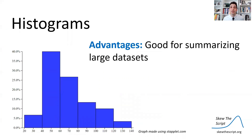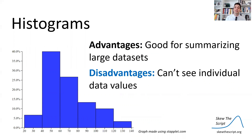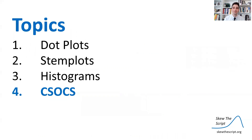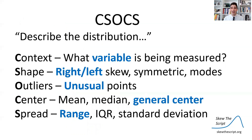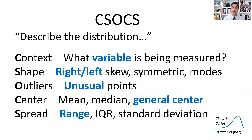Advantages of histograms are that they're good for summarizing large data sets. The disadvantage is that you can't see individual data values, so if you want granularity with a small data set, a histogram won't give you that. When describing a data plot, we want to use what's called CSOCS. If asked to describe a quantitative distribution, talk about: Context, Shape, Outliers, Center, and Spread.